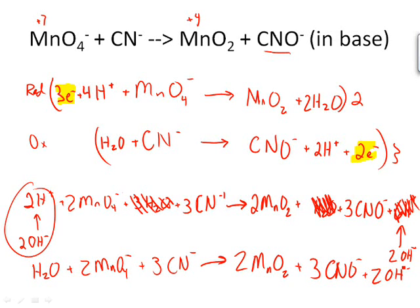Now if we look at the charges, we should have minus 5 on both sides. And we should have the same number of each atom, of each element. Great! We're back.